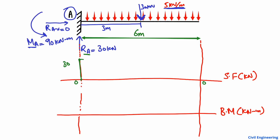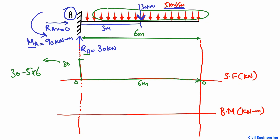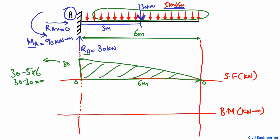From the 30 kN value, the distributed load acts downward. At the free end, the distance is 6 meters, so we compute 30 minus 5 multiplied by 6, which gives 30 minus 30 equals zero. This means the shear force reduces linearly from 30 kN at A back to zero at the free end, forming a straight sloped line — this is the shear force diagram for this cantilever with UDL.